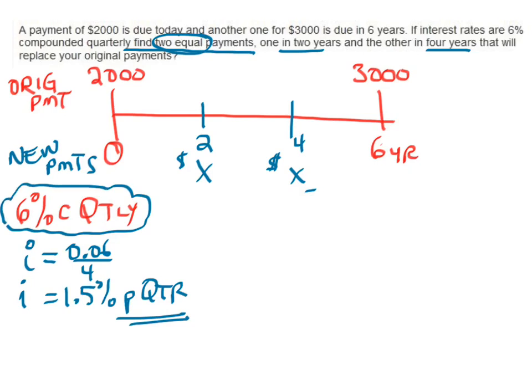In order to solve this problem, we're going to pick a focal date. I'm going to select the 4-year date as focal date. The cool thing about compound interest is it doesn't matter which focal date you select - everyone will get the same answer. Choosing the four-year time allows me to have positive exponents on the variables X.